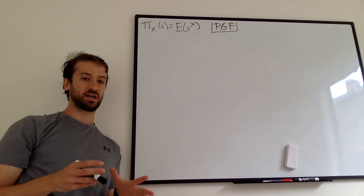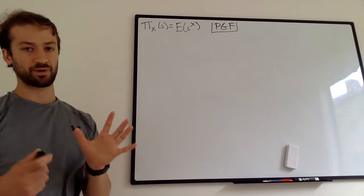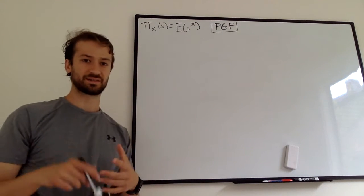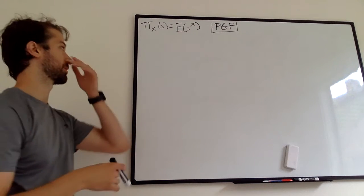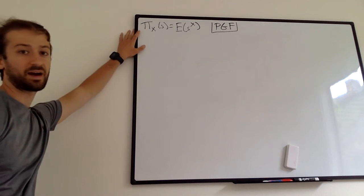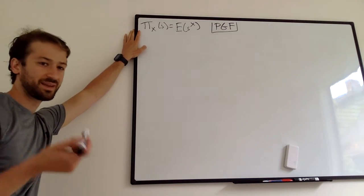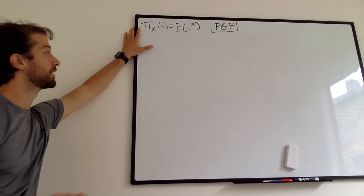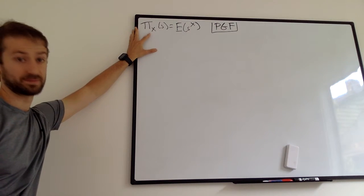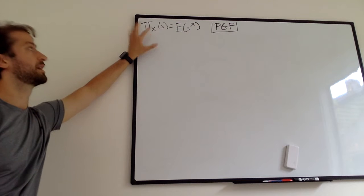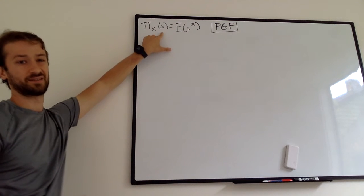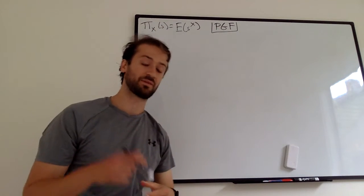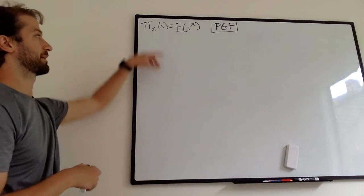The definition of PGF is given here. This is for a random variable X. I try to make random variables capital so we can tell them apart from the note-keeping variables, which are in lowercase. So we use this pi sign instead of P, because we have P for PGF but also P for probability. So we use pi. Pi sub X means the PGF of the random variable X, with respect to the note-keeping variable lowercase s — similar to the MGF where lowercase t is the note-keeping variable.